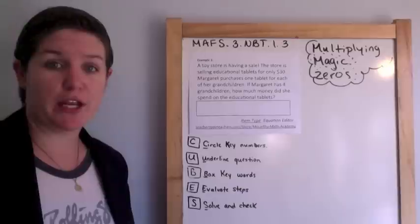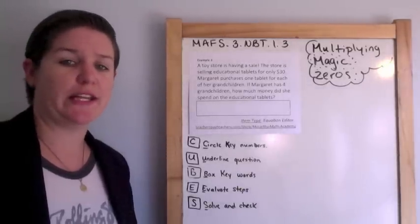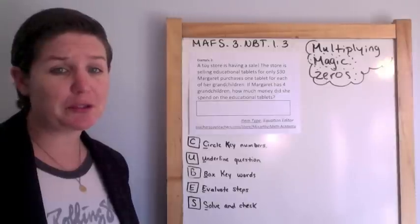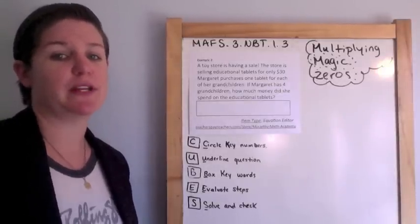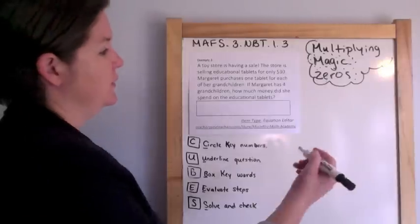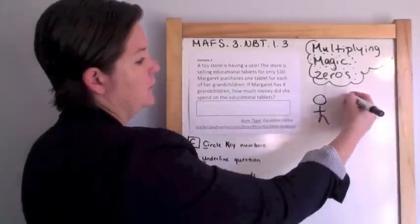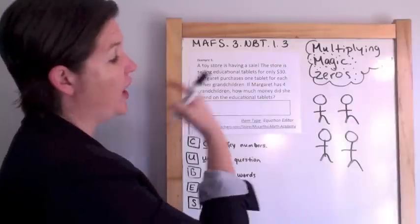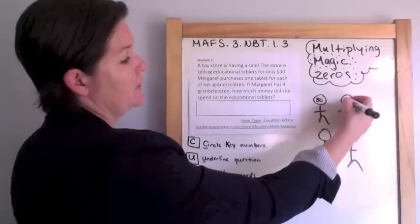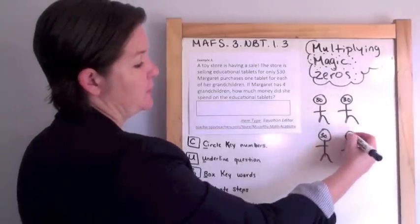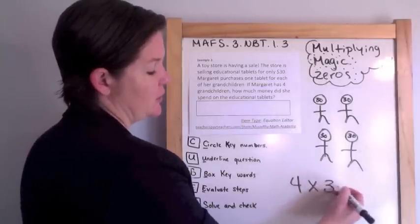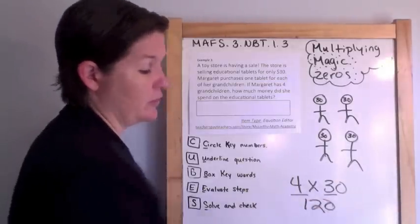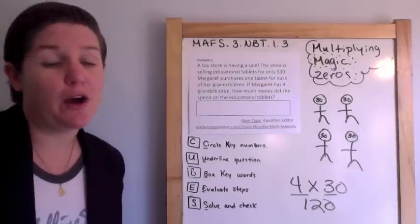Example three. A toy store is having a sale, selling educational tablets for only $30. Margaret purchases one tablet for each of her grandchildren. If Margaret has four grandchildren, how much money did she spend on educational tablets? She bought one for each kid — she has four kids — so that's $30 for each one. Four times three is 12, add the zero, is $120. And Margaret gets the Grandma of the Year award.